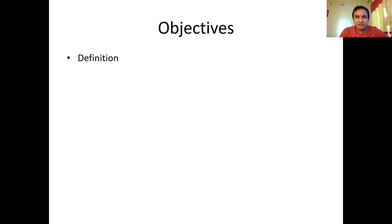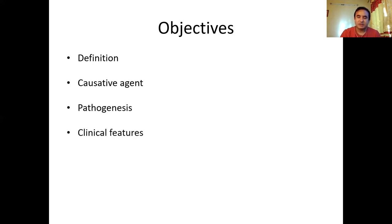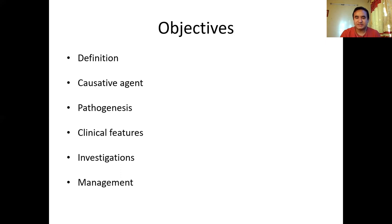So what are the objectives of today's session? We will discuss the definition of meningitis, then encephalitis, then brain abscess. We will also discuss the etiological agents of meningitis, its pathogenesis, clinical features, investigations, and how we are supposed to manage the patient with meningitis. Be attentive — I bet it will be productive for you all.